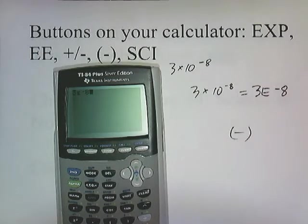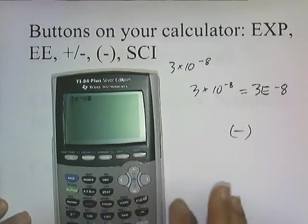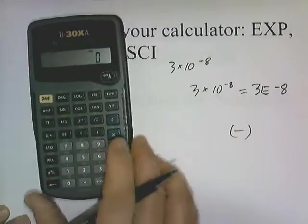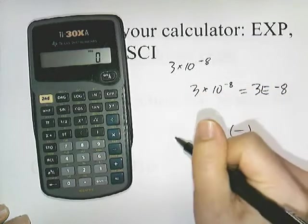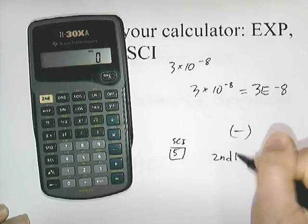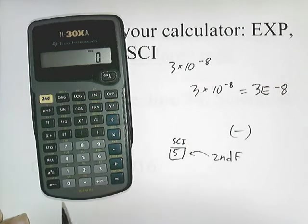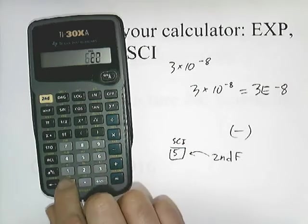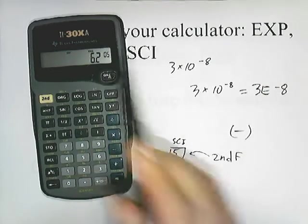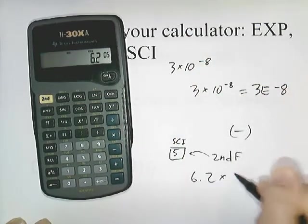Some calculators can convert numbers automatically into scientific notation. For example, this one has SCI printed above the number 5 button. If you hit second function and then 5, it'll automatically convert any number into scientific notation. So for 62000, I hit second function then 5, and it gives me 6.2 times 10 to the 5th.